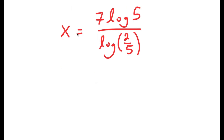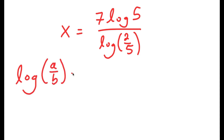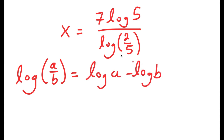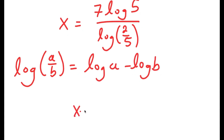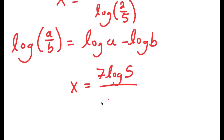Now from here, we want to find the value of x, so we divide both sides by log(2/5), giving x is equal to 7 times log 5 over log(2/5). This is our solution, but there is a way to simplify it more. Using the property log(a/b) = log a minus log b, log(2/5) equals log 2 minus log 5.